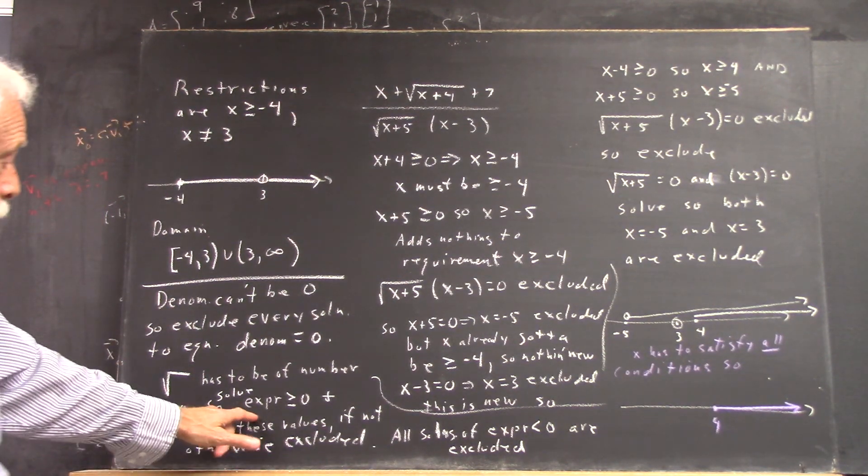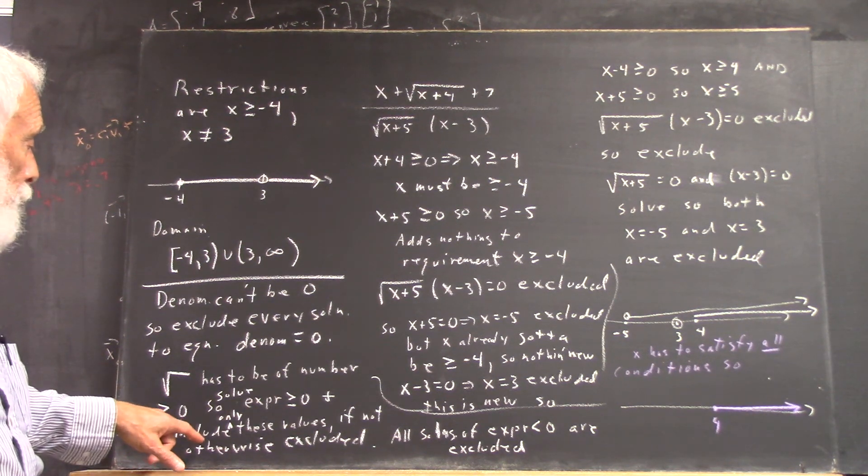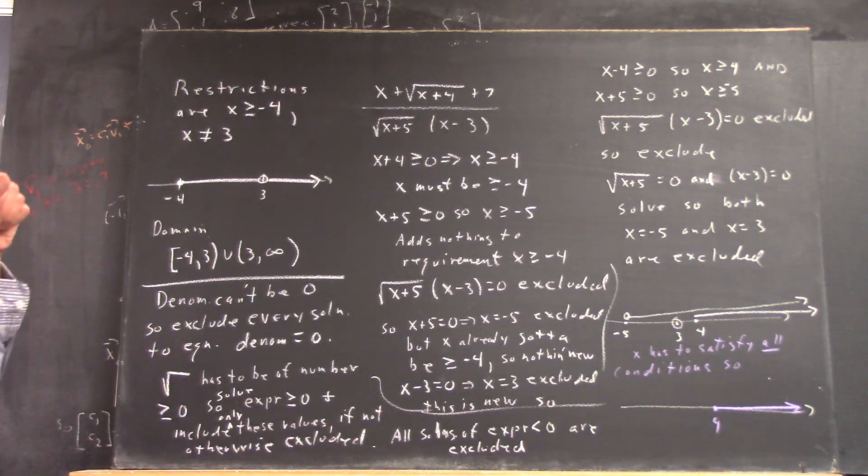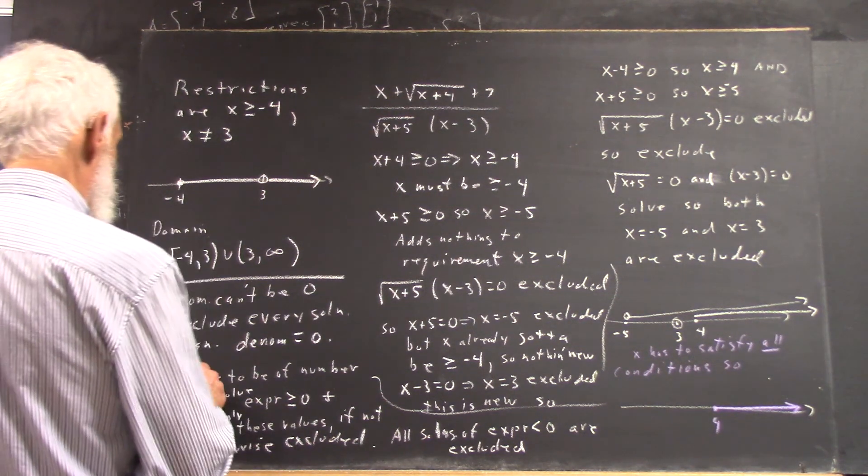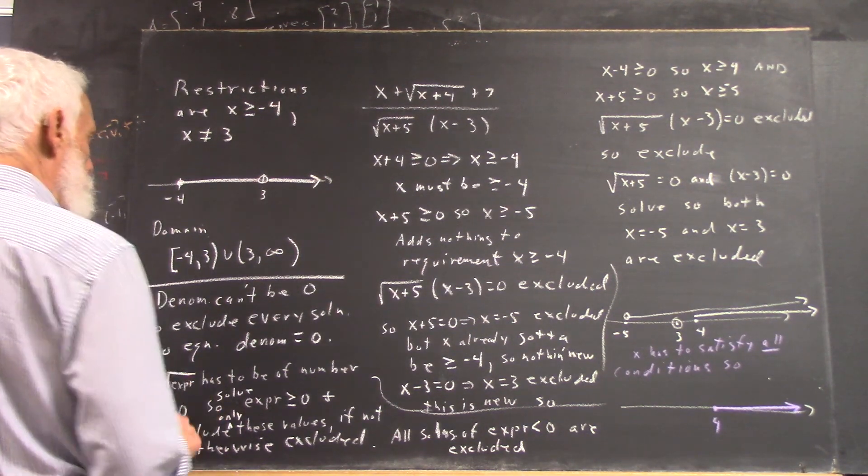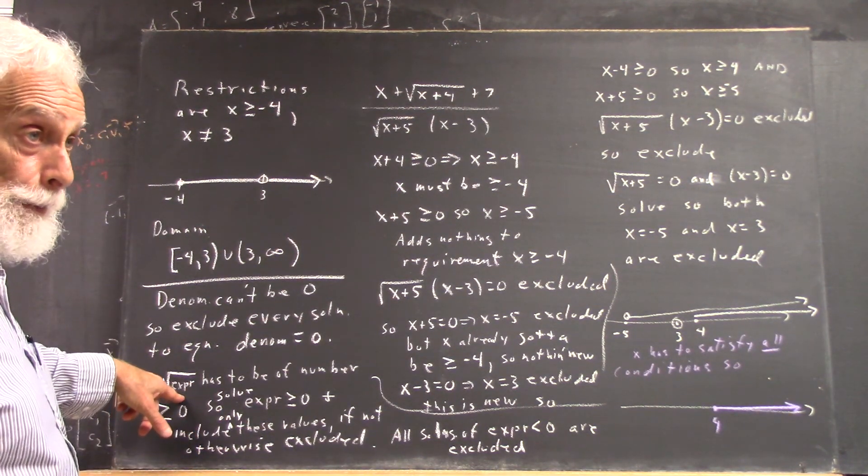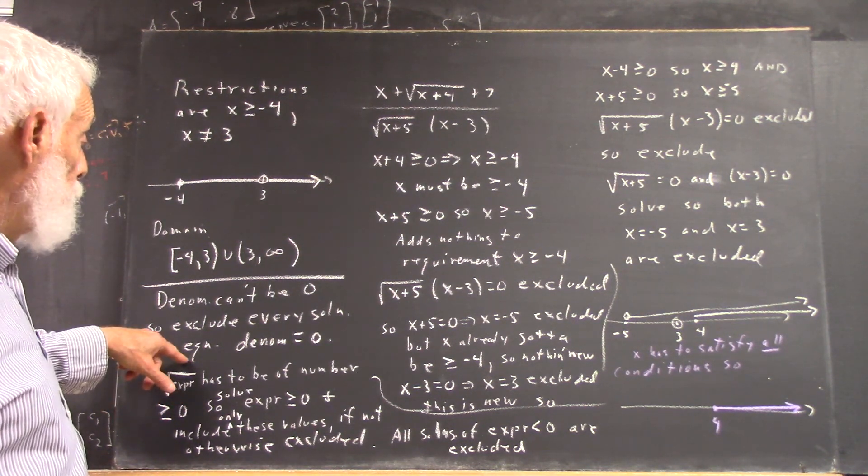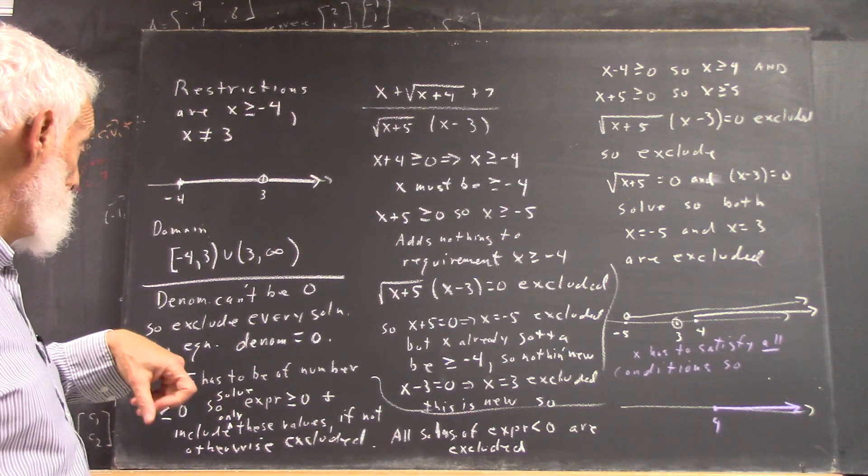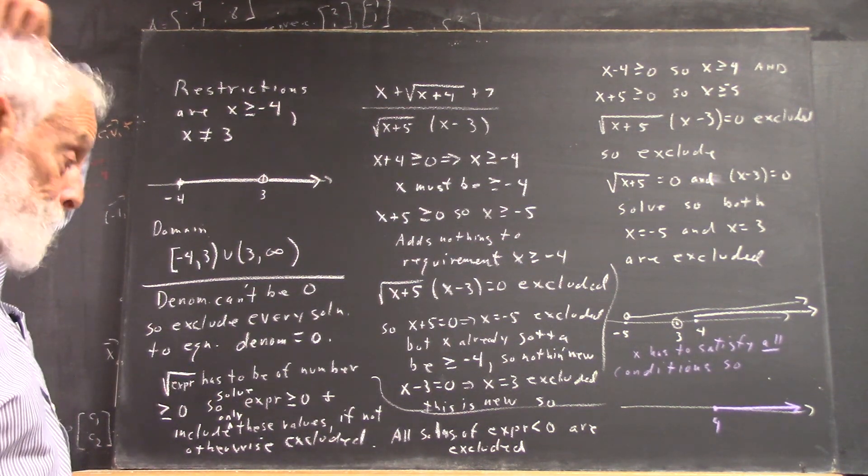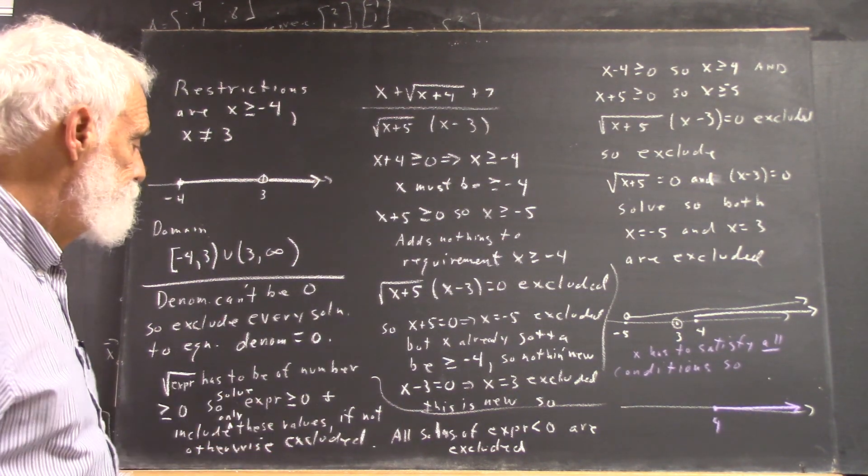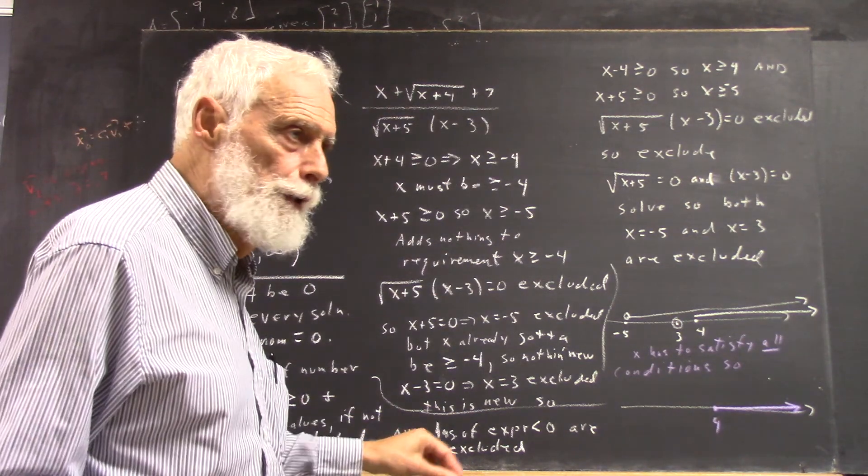You solve expression greater or equal to zero, and then we include only these values. I'll use expr to stand for expression. Whatever the expression is, its square root has to be greater than zero. So you include only values that make it greater or equal to zero. It means you immediately throw out any value that doesn't.